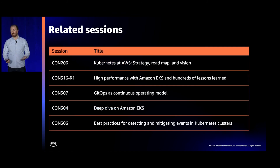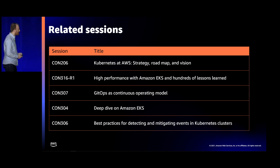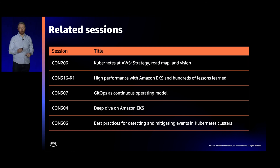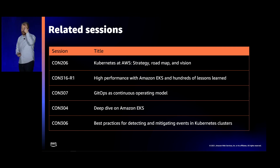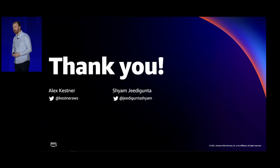I want to highlight a couple of related sessions here at re:Invent 2021. The Kubernetes on AWS strategy and roadmap session happened earlier today. There's also a high performance session that will probably be of interest to folks in this room, as well as a GitOps session — an area where we're seeing a lot of interest from customers for managing their clusters. There's also a deep dive on EKS and best practices for mitigating events in Kubernetes clusters. With that, we're going to wrap up here. Thank you so much for your time today — we're really excited to be here and to speak to all of you about the work we've been doing at Amazon EKS.